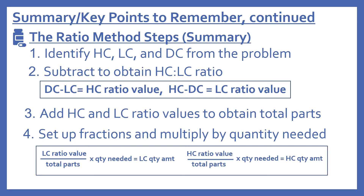Summary of the ratio method steps: identify the high concentration, low concentration, and desired concentration from the problem. Subtract to obtain the HC to LC ratio: DC minus LC gives you the HC ratio value; HC minus DC gives you the LC ratio value. Next, add the HC and LC ratio values to obtain the total parts. Then set up fractions and multiply by the quantity needed: the LC ratio value over total parts times quantity needed gives your low concentration amount; the HC ratio value over total parts times quantity needed gives your high concentration amount.